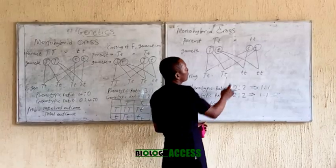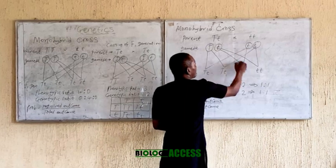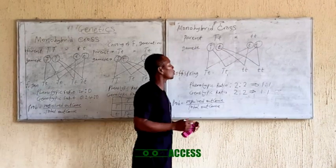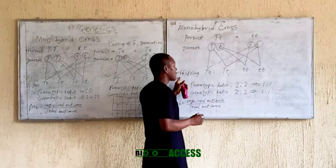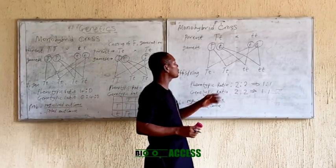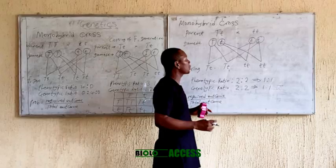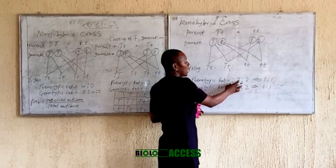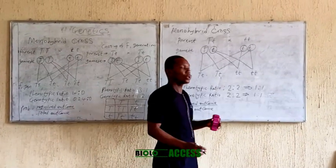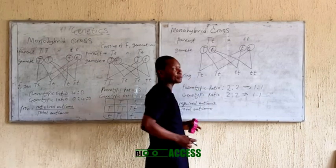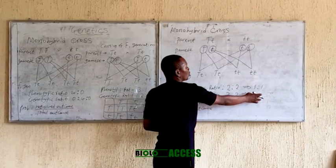So you get the gametes as usual and carry out the cross: this crosses with this, this with this, this with this, and this with this — using the same procedure as our earlier example. The offspring phenotypic ratio shows: this is tall, this is tall, this is short, and this is tall — giving two tall and two short. Since it is a 2:2 ratio, it can be simplified to 1:1. The genotypic ratio is also 2:2, or 1:1.